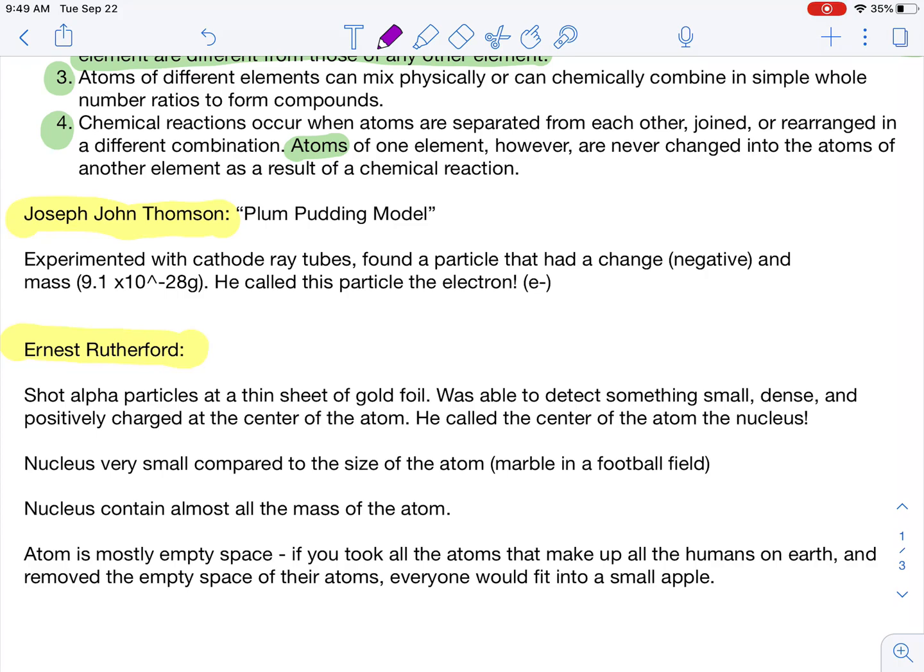He experimented with these things called cathode ray tubes and found a particle that had a charge, a negative charge specifically. He called that particle the electron. So Thompson, what I'd like you to know, J.J. Thompson, he discovered the electron.